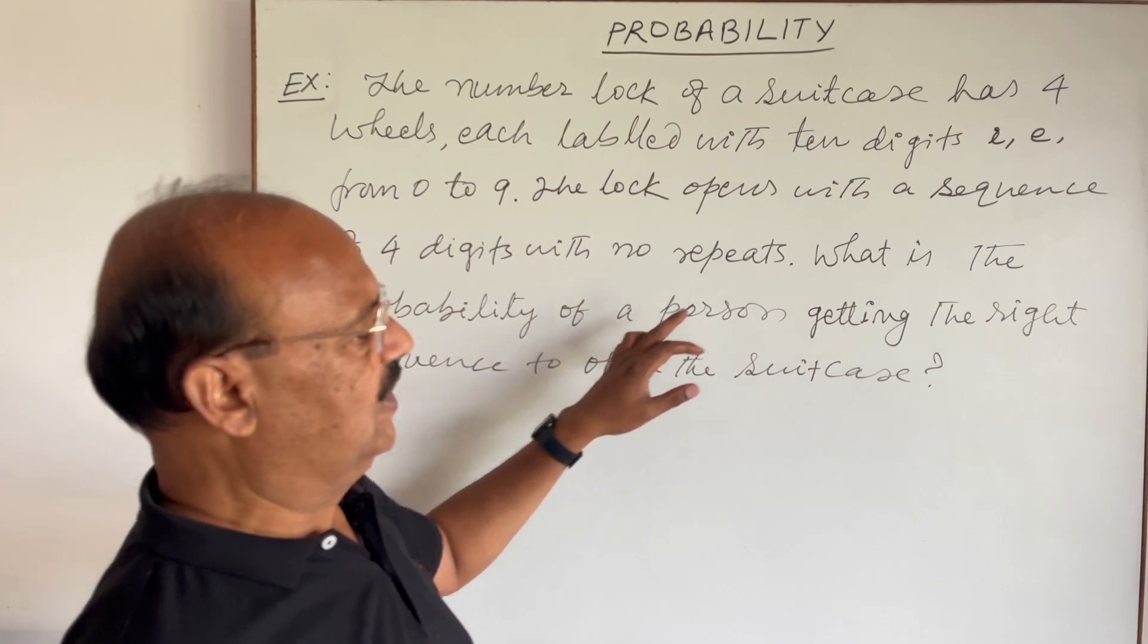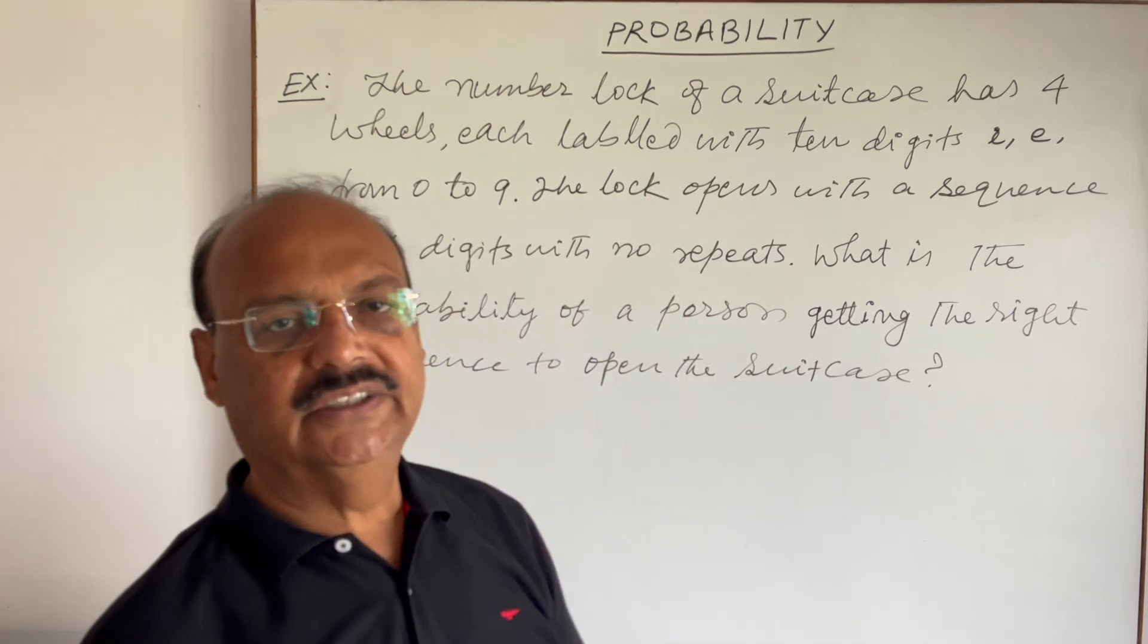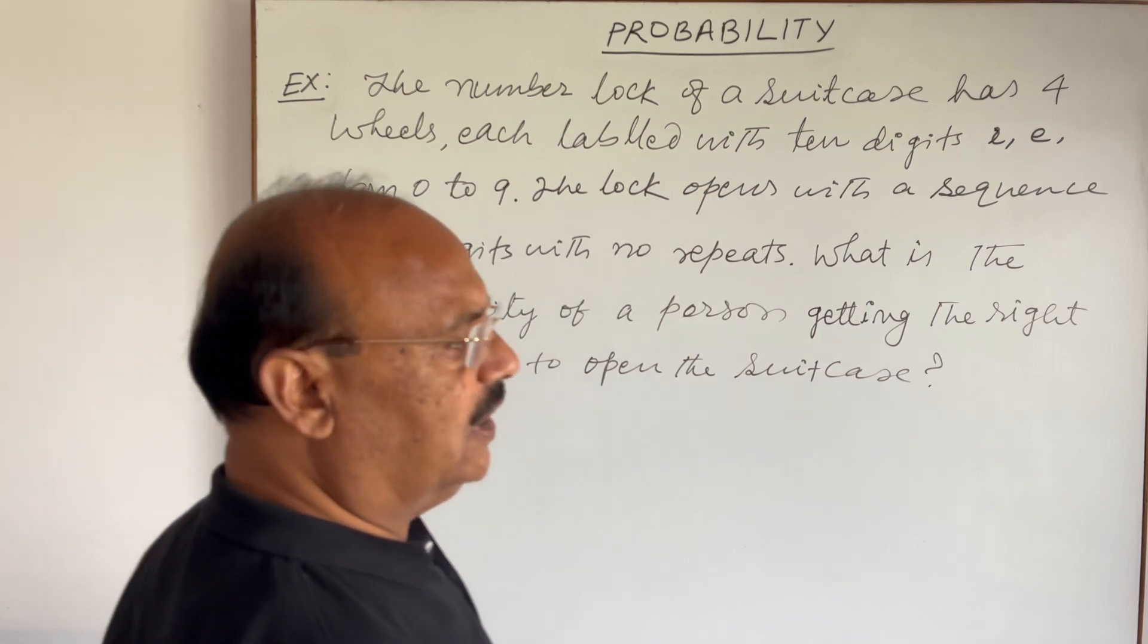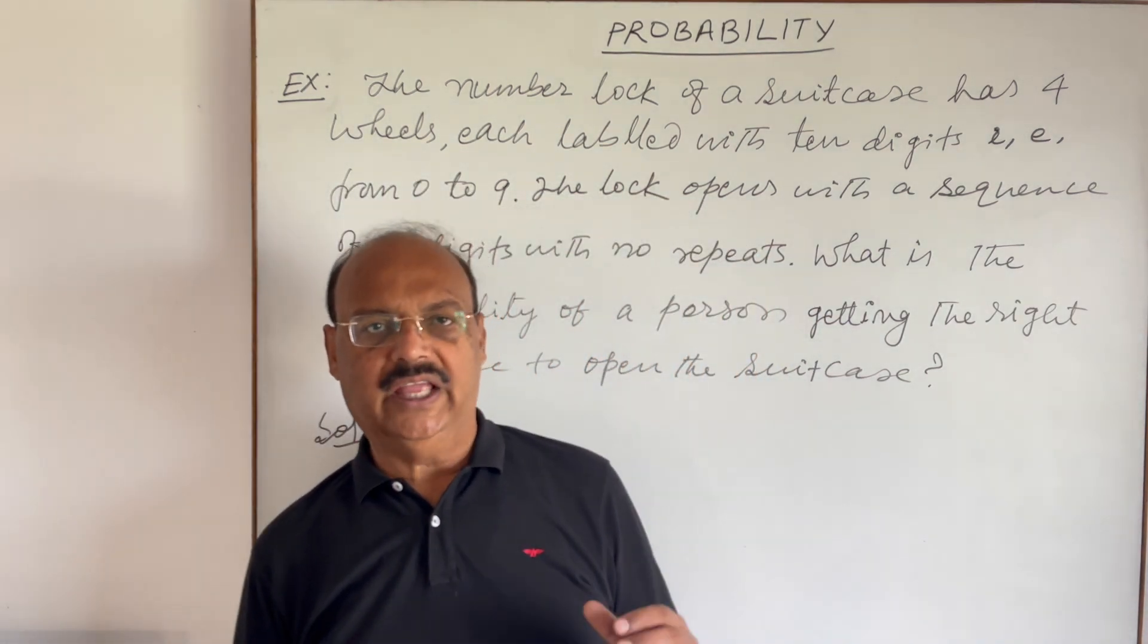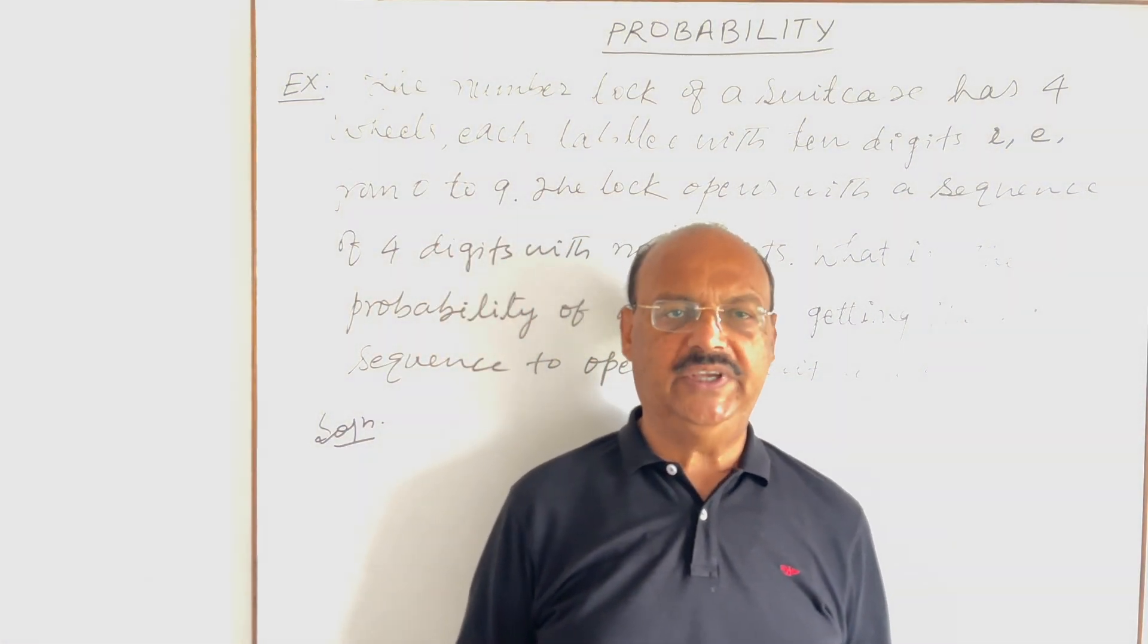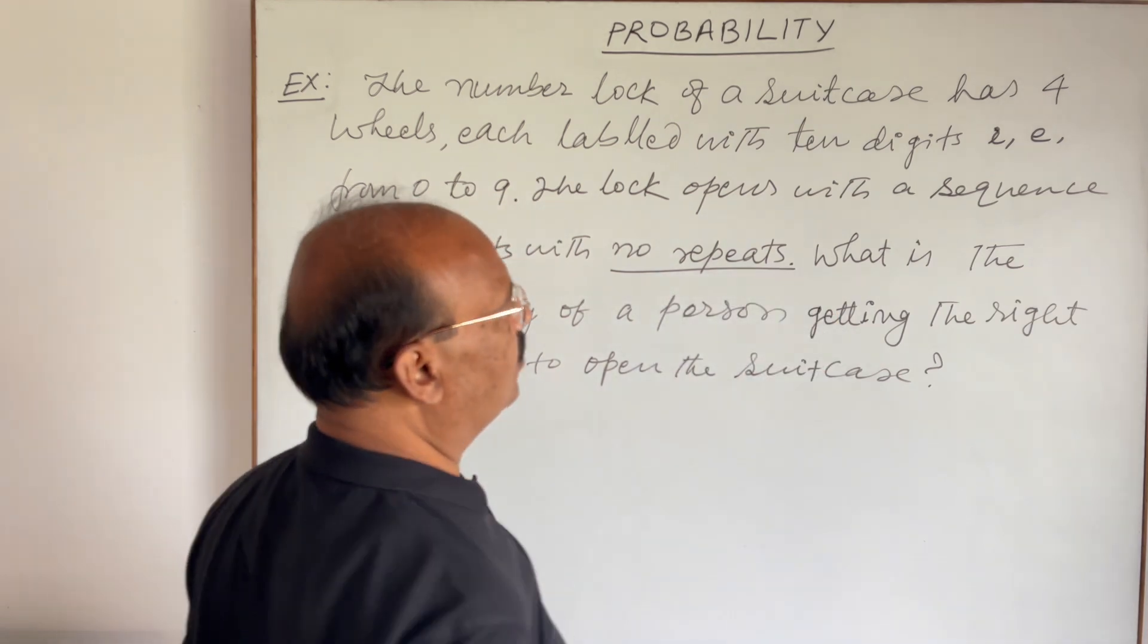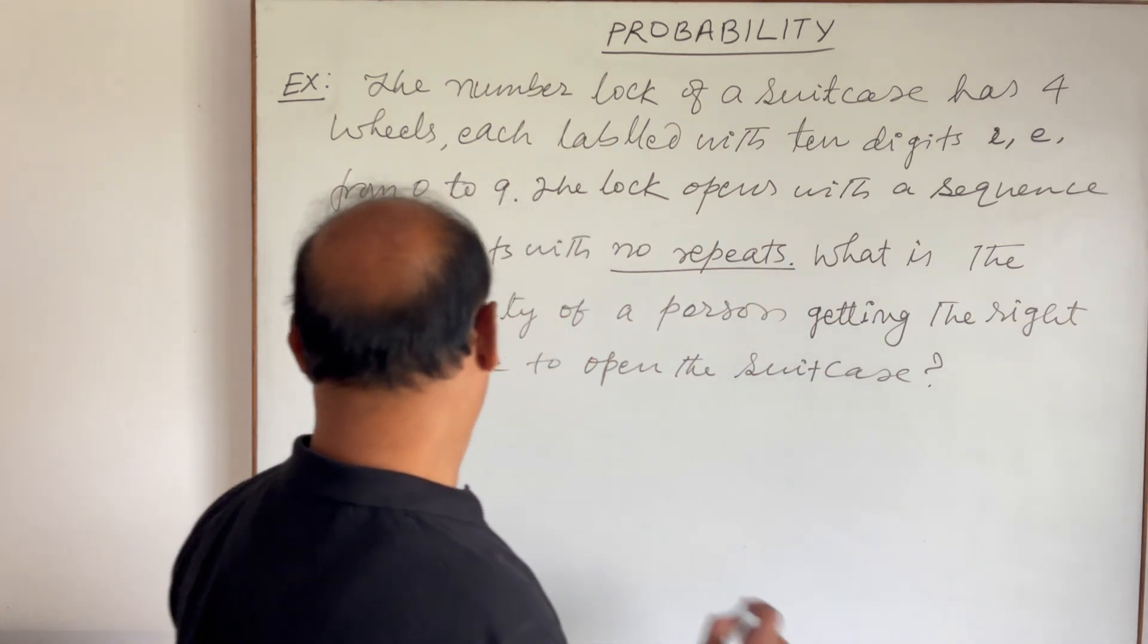What is the probability of a person getting the right sequence to open the suitcase? The solution is very simple here. So there are four wheels for rotation and every wheel having digits zero to nine, I mean ten digits, and the condition is here that repetition is not applicable, cannot be repeated. So four wheels are there.